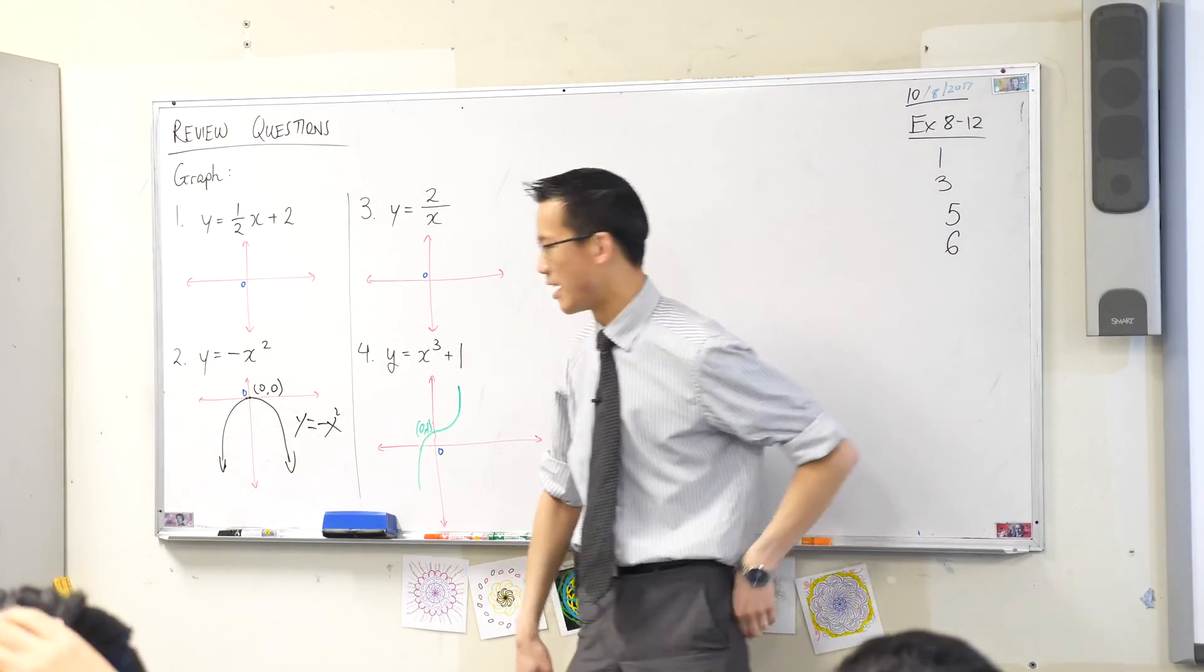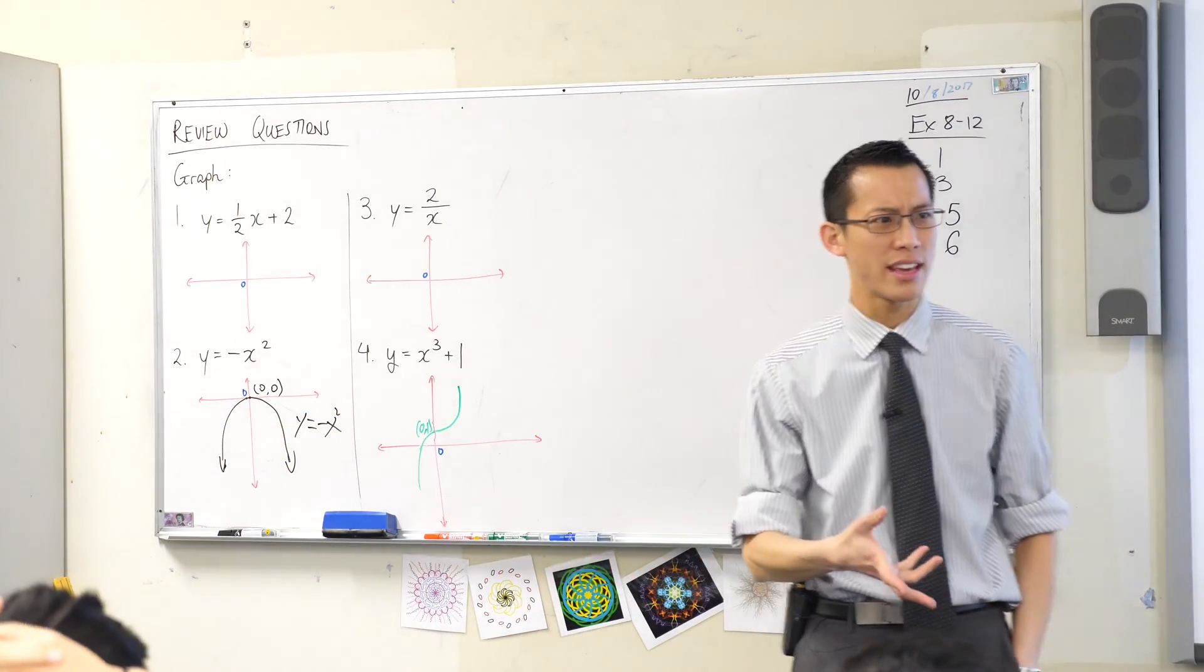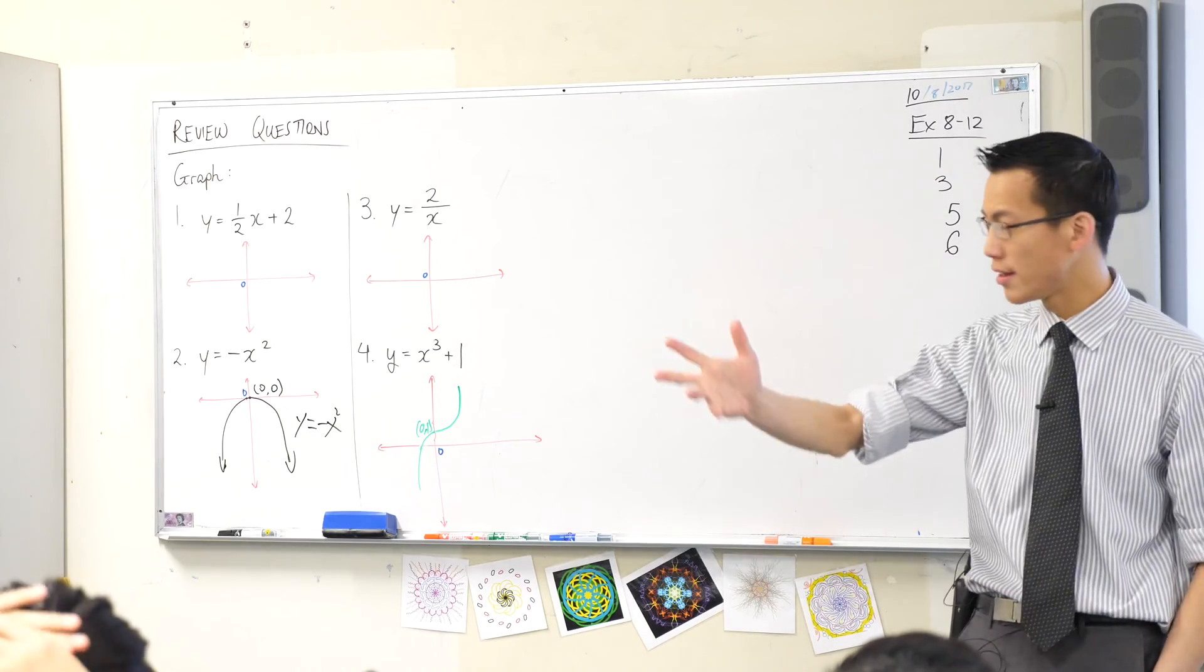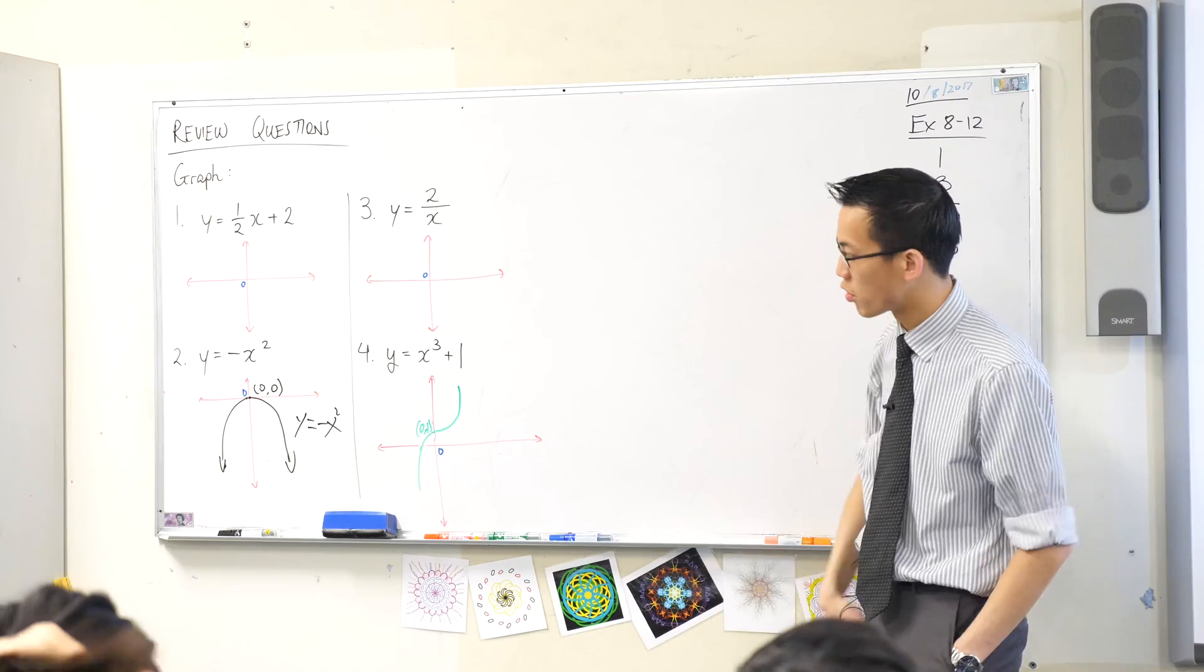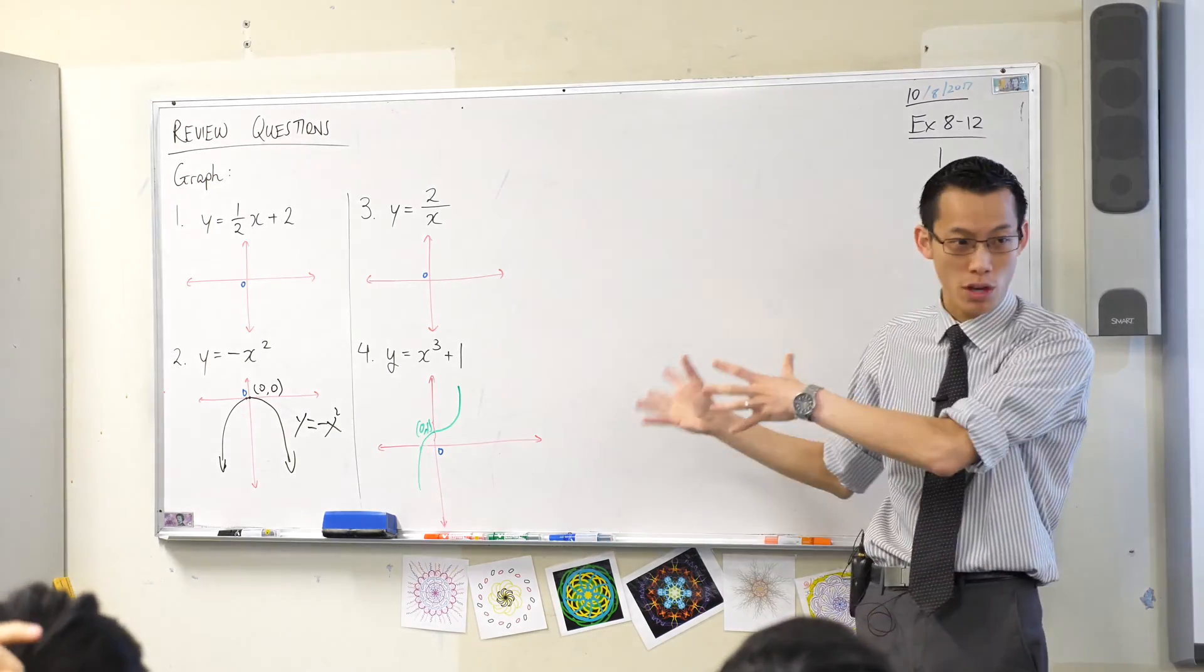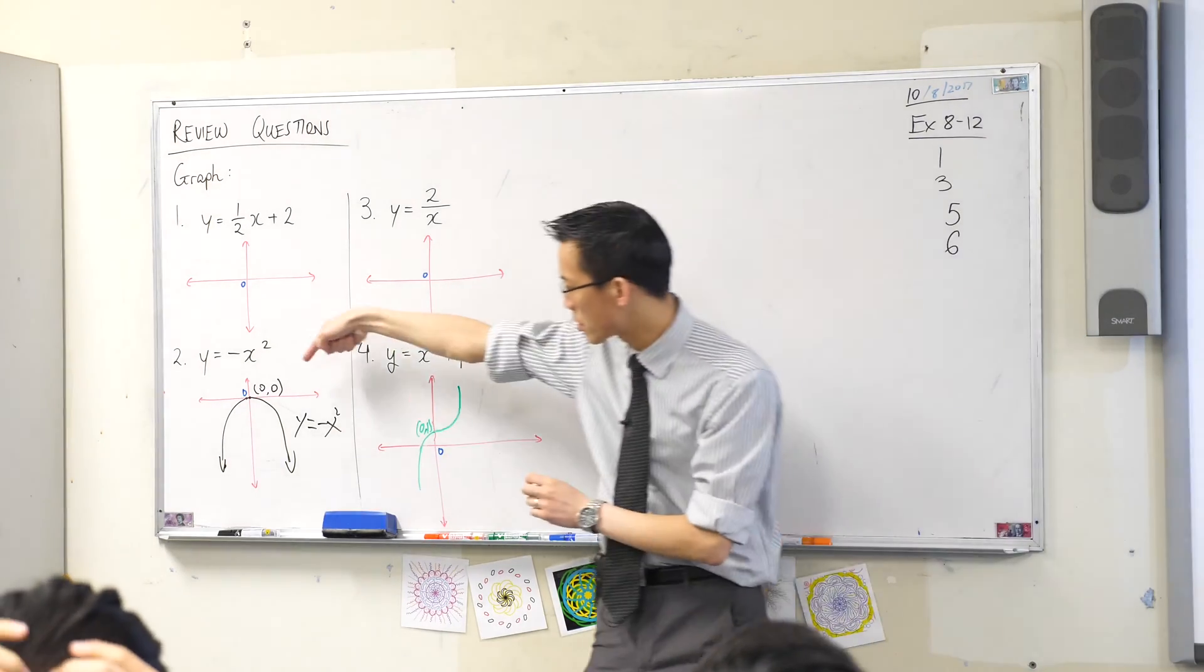Have a look at this one, number two. So what kind of shape is this again? Starts with a P? It's a parabola. Okay, so lots to like about this. It's got a great nice simple smooth curve to it. I have the vertex right there.